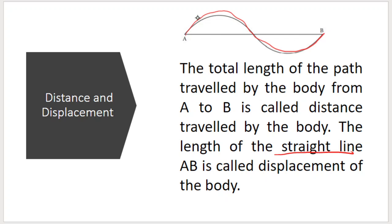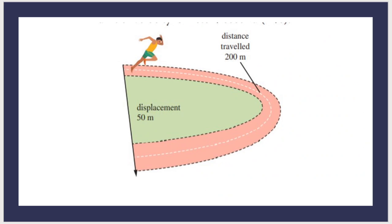The total length of the original path from A to B is known as distance. But the length of the straight line between the two points is displacement. Distance is the total length of the path; displacement is the shortest path. Let us have some examples. See this figure — an athlete is running.